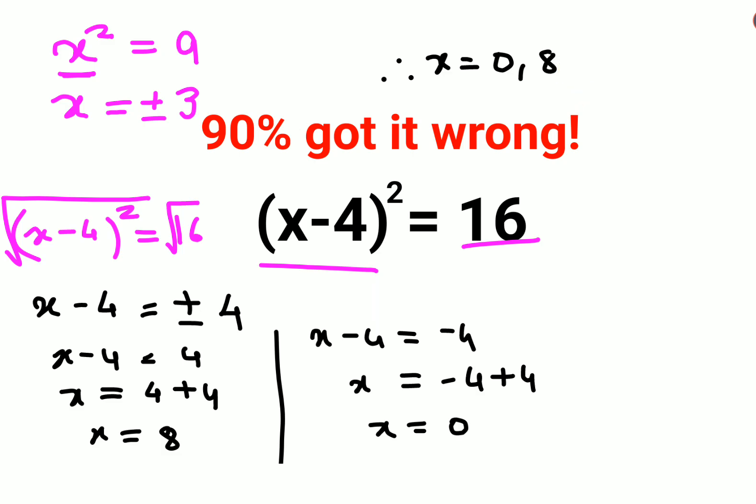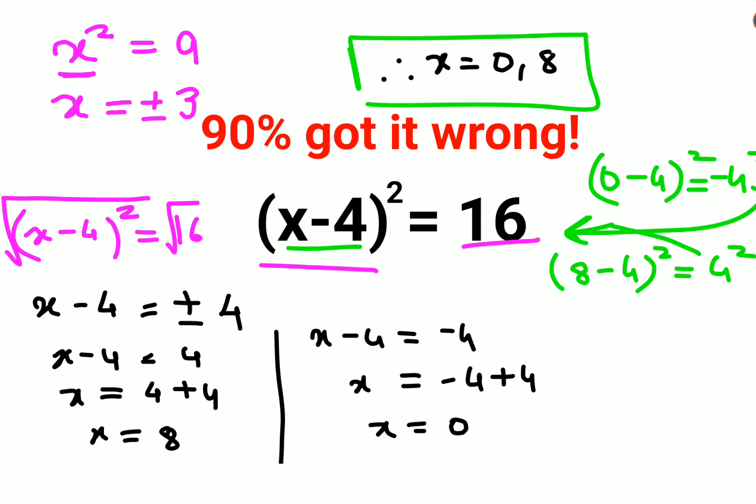Let's put it in our question which is x minus 4. If we put 0, so 0 minus 4 gets you minus 4 squared, that is 16. And the other value is 8. 8 minus 4 the whole square, that gets you 4 squared, that is also 16. So we can say the value for x in this particular question is 0 or 8.